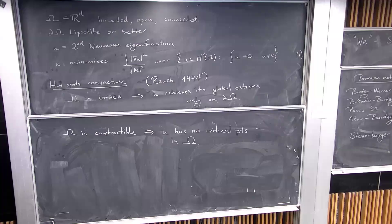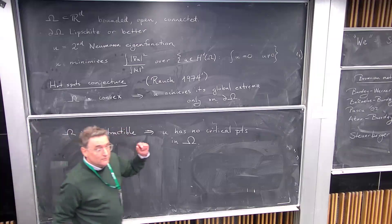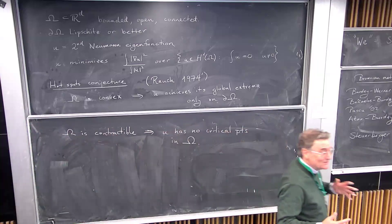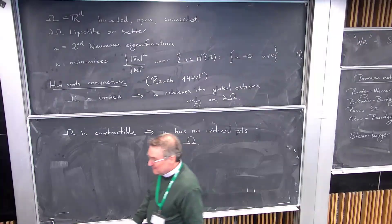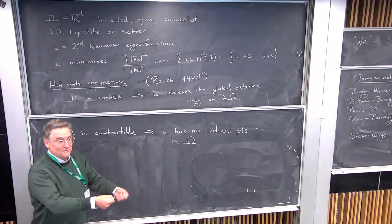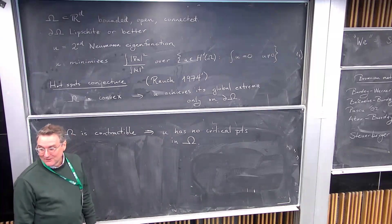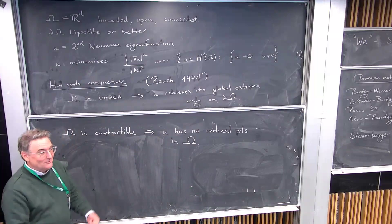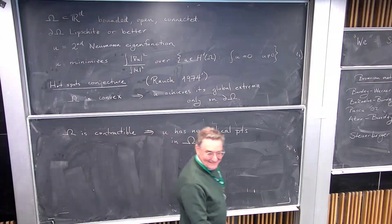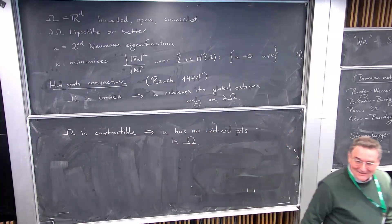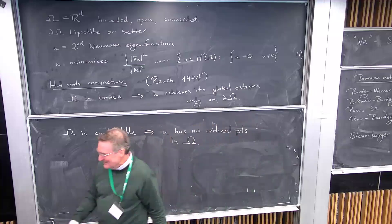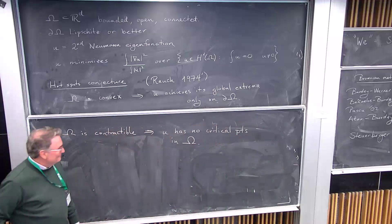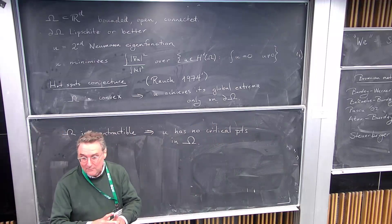At that time, computers weren't as powerful as they are now — this was around the era of stacks of punch cards. Now we have much better computational tools. Contractible means homotopic to a point — for example, a spherical shell is simply connected but not contractible because it contains a sphere you can't collapse.